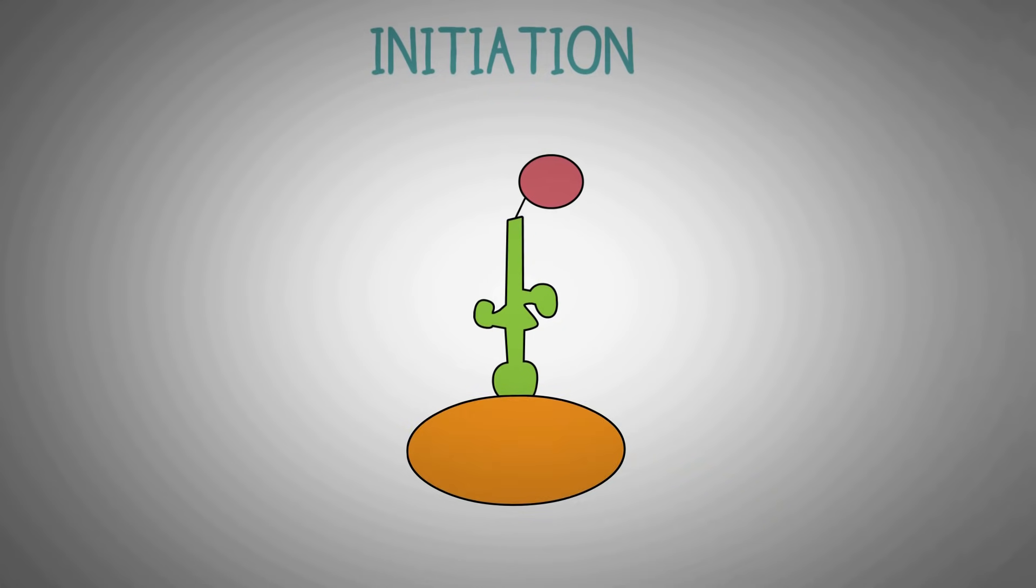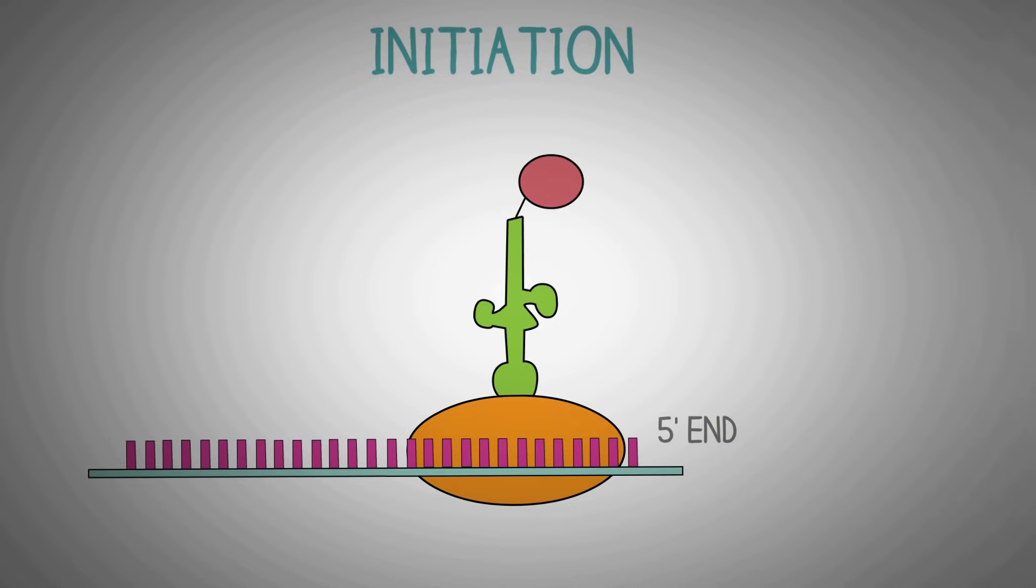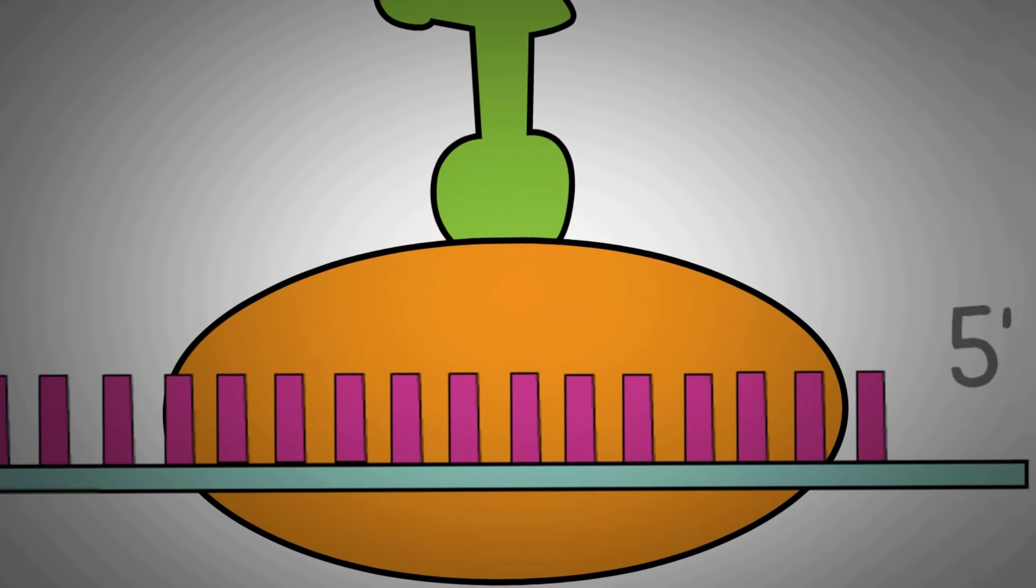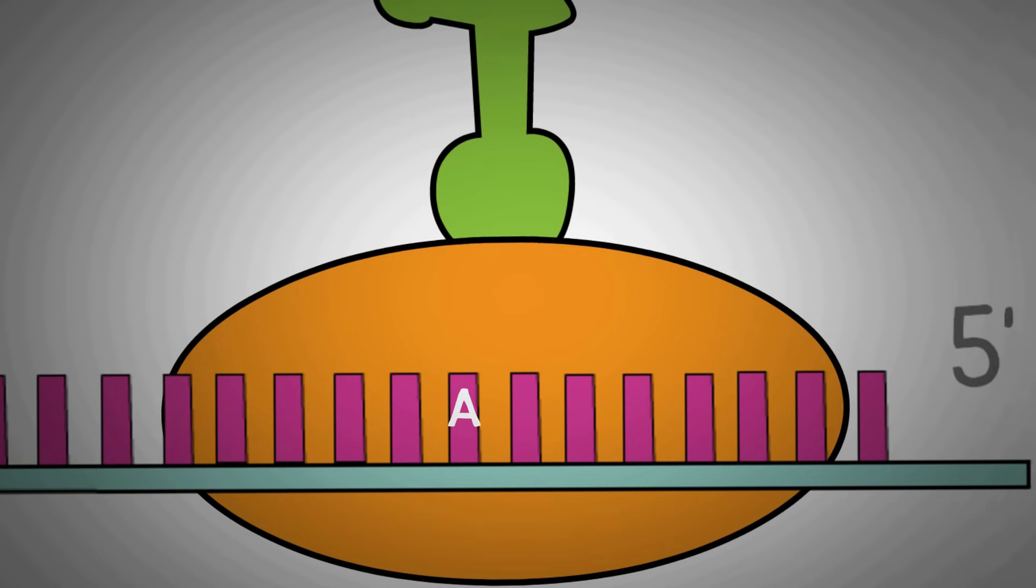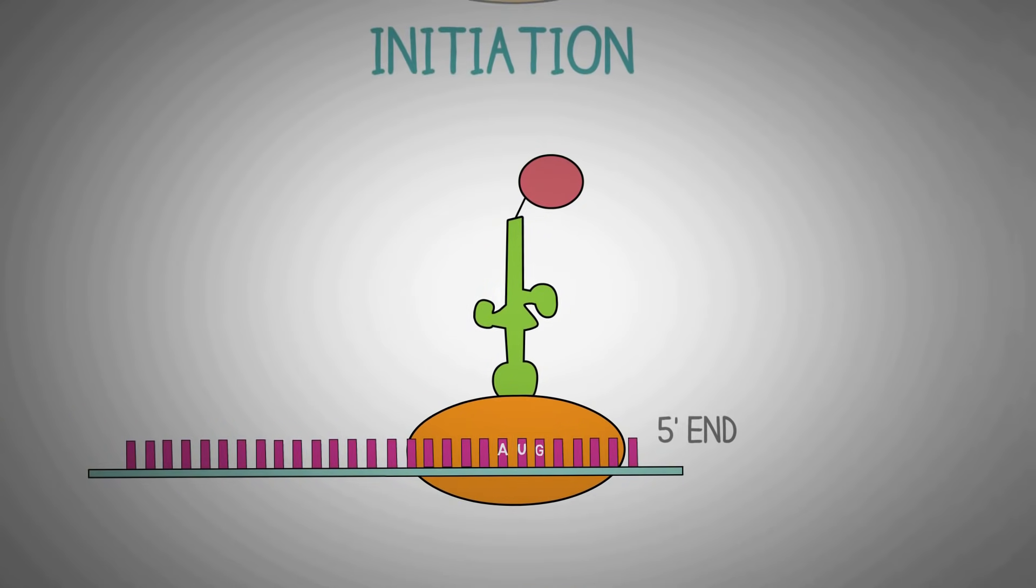This tRNA attaches to the smaller subunit of ribosome and when it encounters a mRNA, it starts reading the code on the mRNA from its 5' end. As soon as the tRNA ribosome finds the start signal, the AUG codon, it immediately binds to the larger subunit to form the complete ribosome and the protein synthesis is initiated.